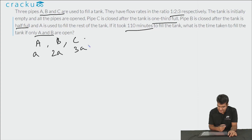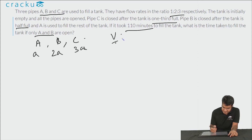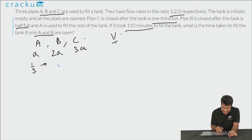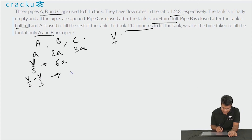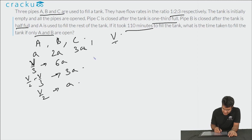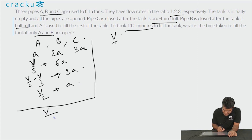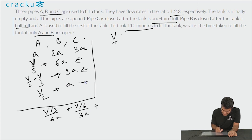Let the flow rates of A, B and C be a, 2a and 3a, and let the total volume be V. For the first one-third of the tank, total flow rate is a + 2a + 3a = 6a. From V/3 to V/2, the flow rate is a + 2a = 3a (volume = V/6). For the last V/2, only pipe A flows at rate a. Total time = (V/3)/6a + (V/6)/3a + (V/2)/a = V/18a + V/18a + V/2a = 110 minutes.